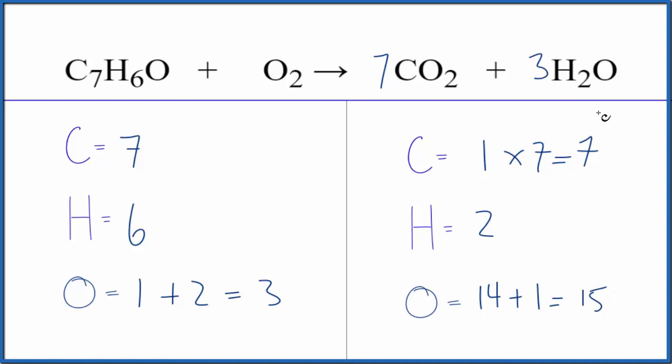Let's put a three in front of the H2O. Two times three. That would give us six hydrogens. So we've balanced the hydrogens.